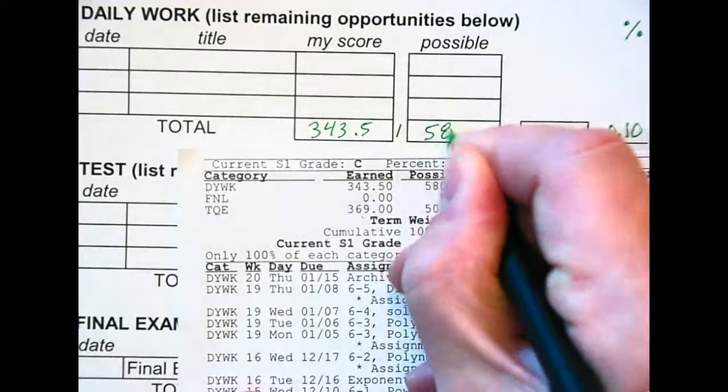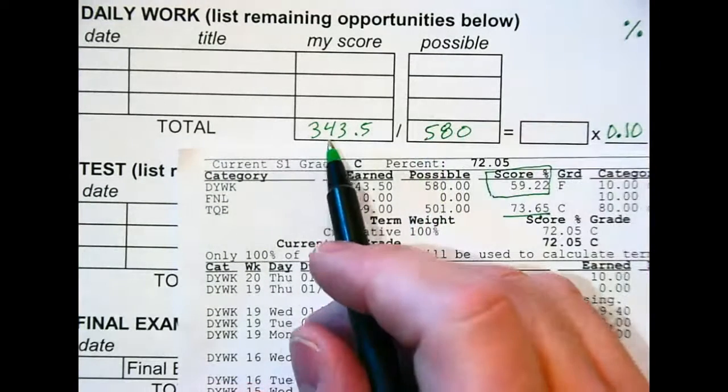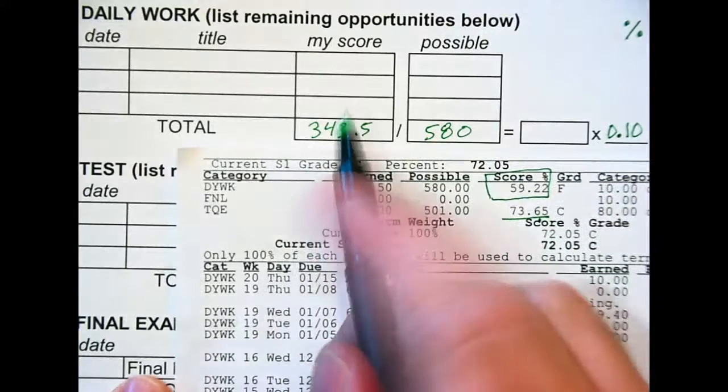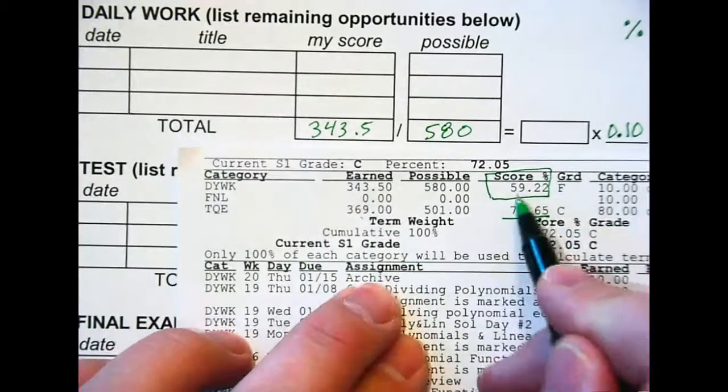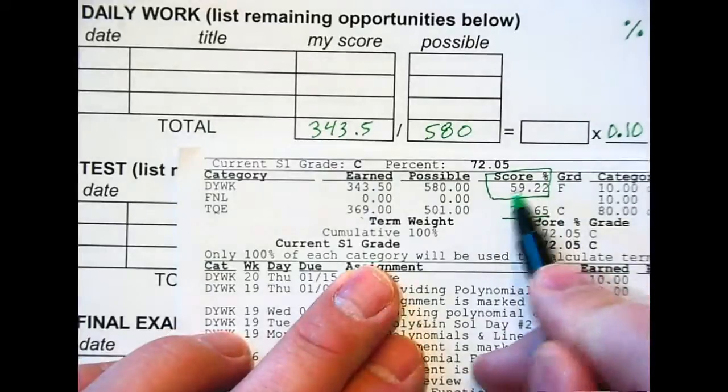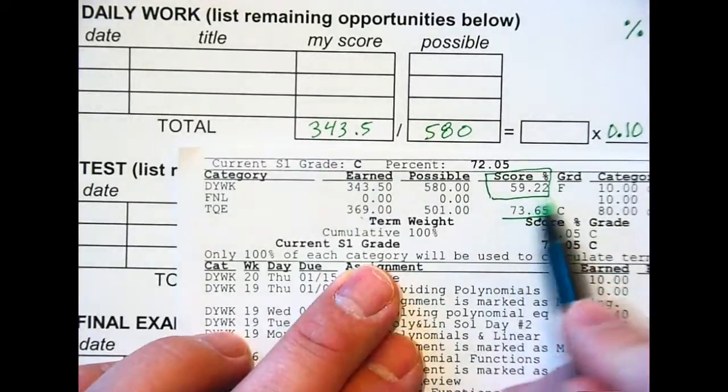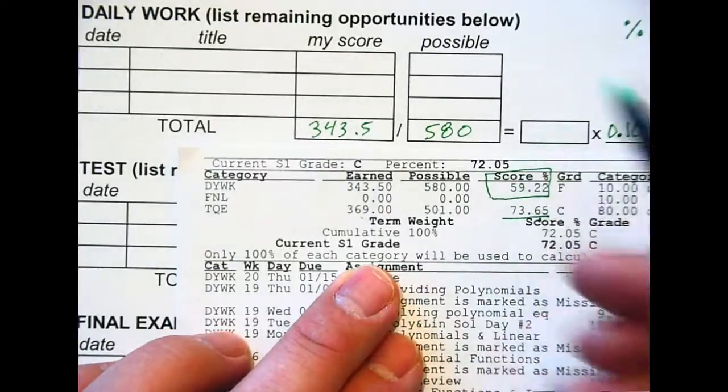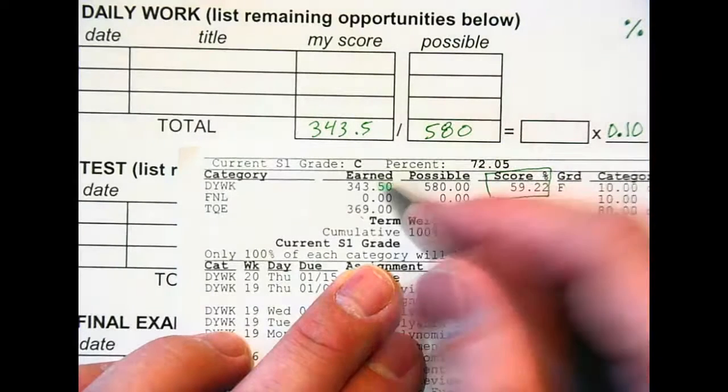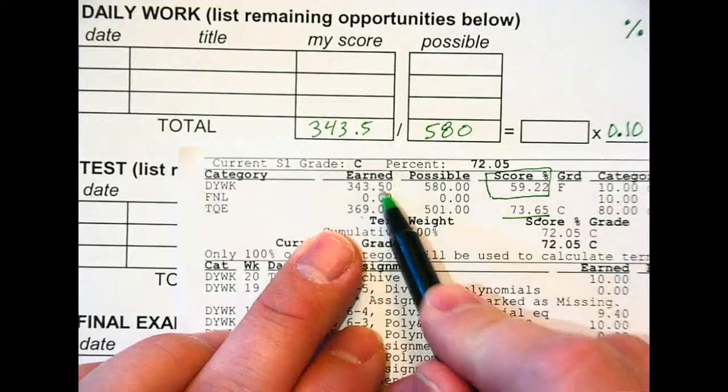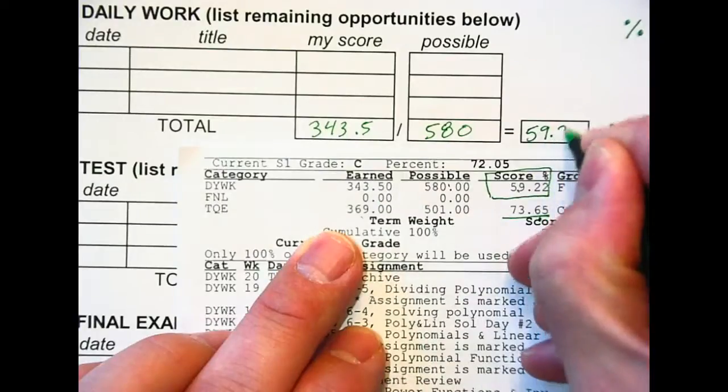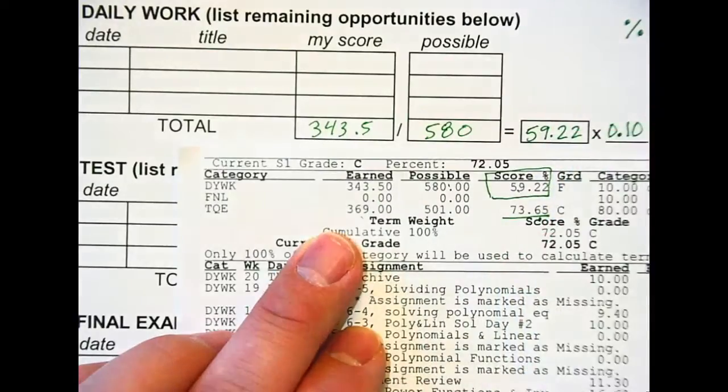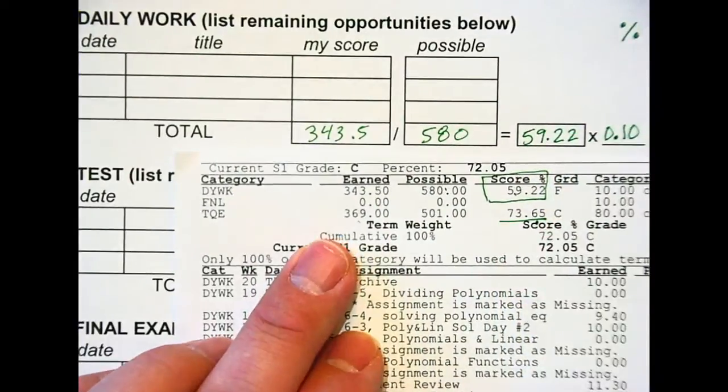So, really, I've earned that many points, and if I actually divided 343.5 by 580, I would get 59.22. It's so nice of the computer to actually do the math for me, but if you don't believe it, you can check the computer's math, and you divide this by that, you get that. 59.22. So, that's my percent for that category. That's not good. That means in my daily work, I earned an F in daily work this semester.